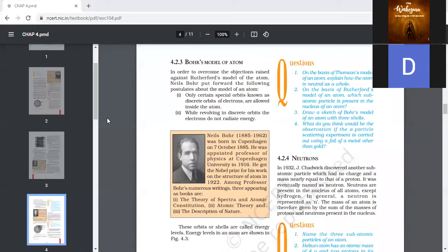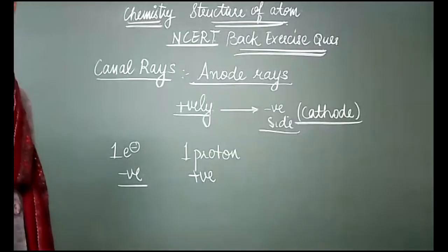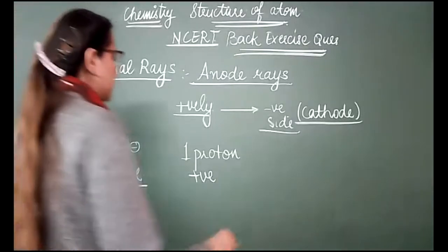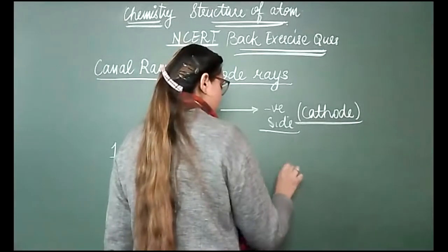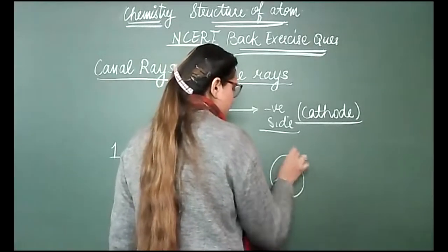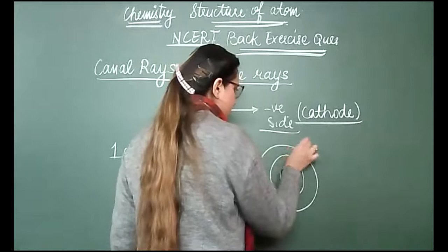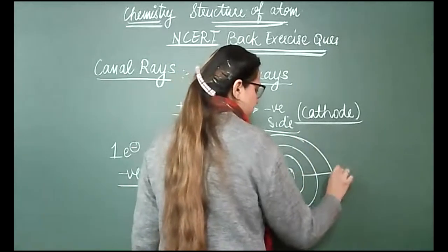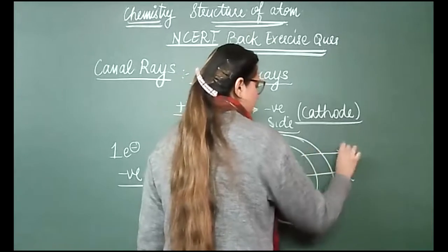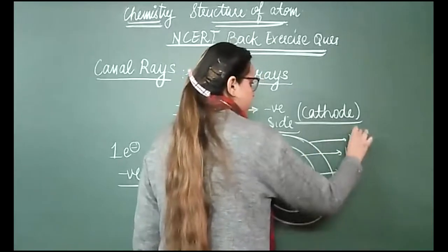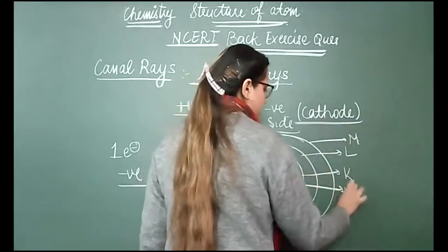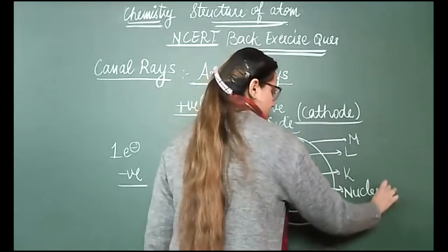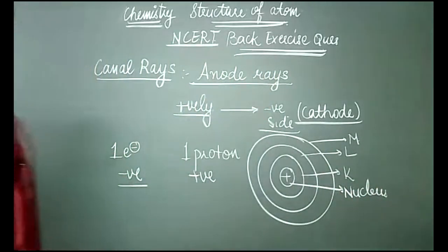Now you have to draw a sketch of the Bohr model of the atom with three shells. The three shells are the K shell, then the L shell, then the M shell, with the nucleus at the center.